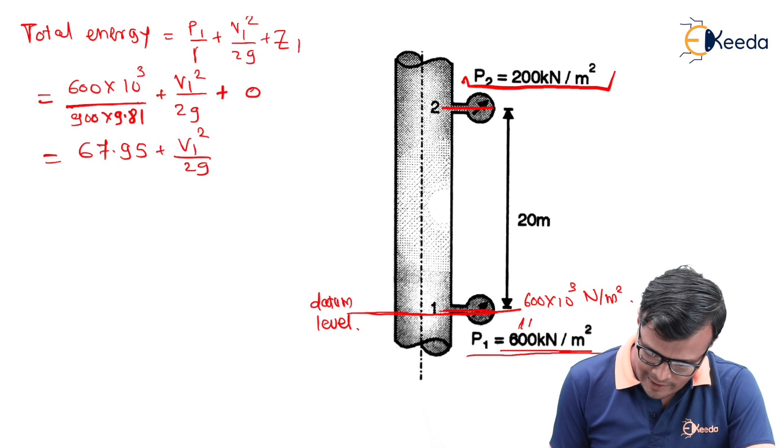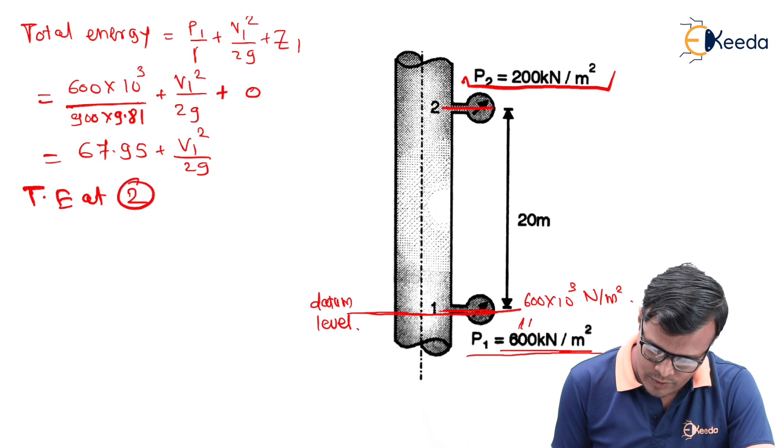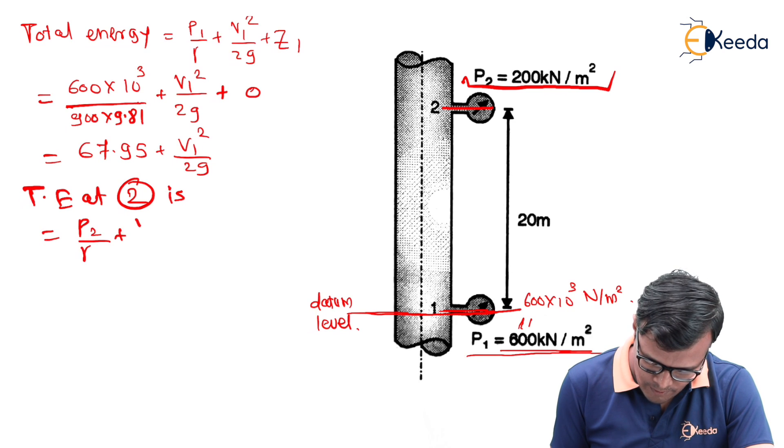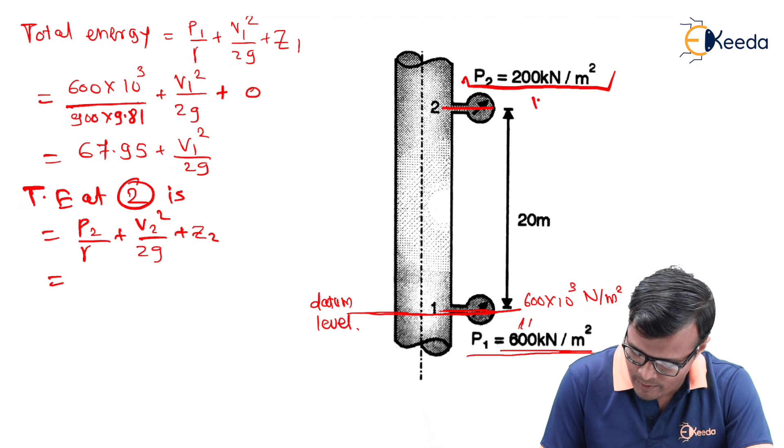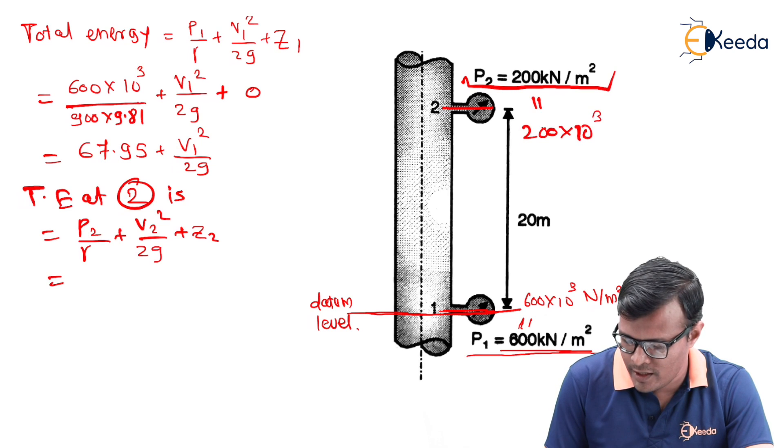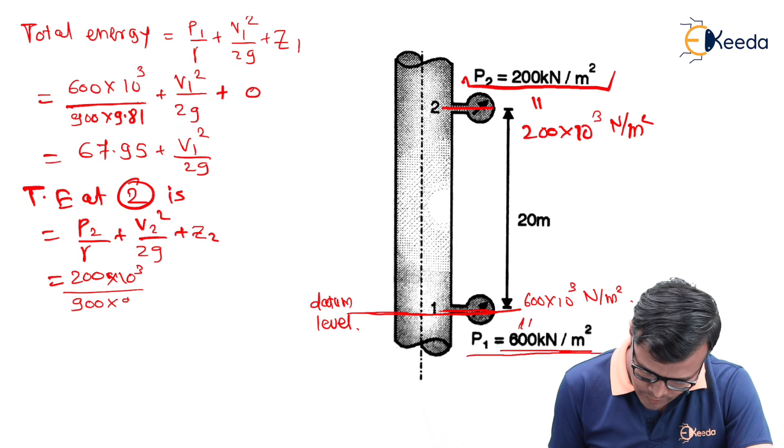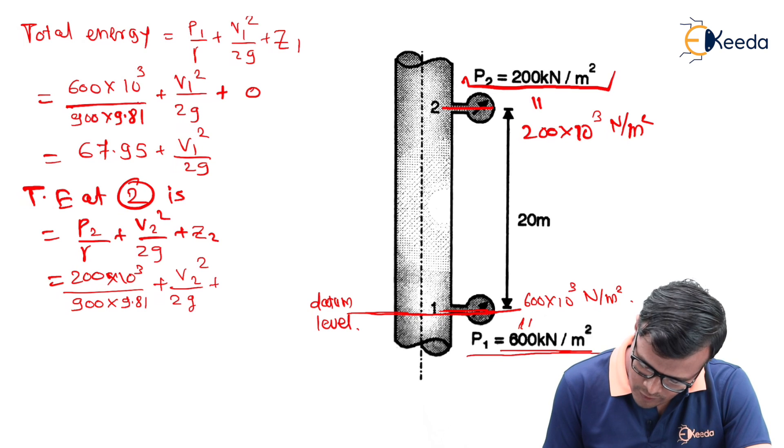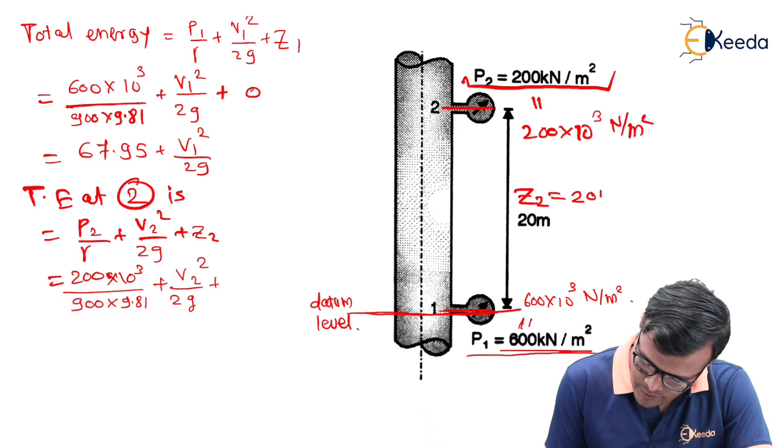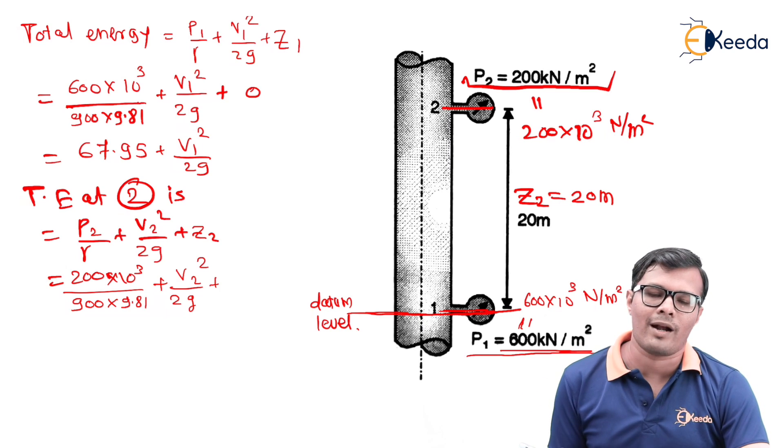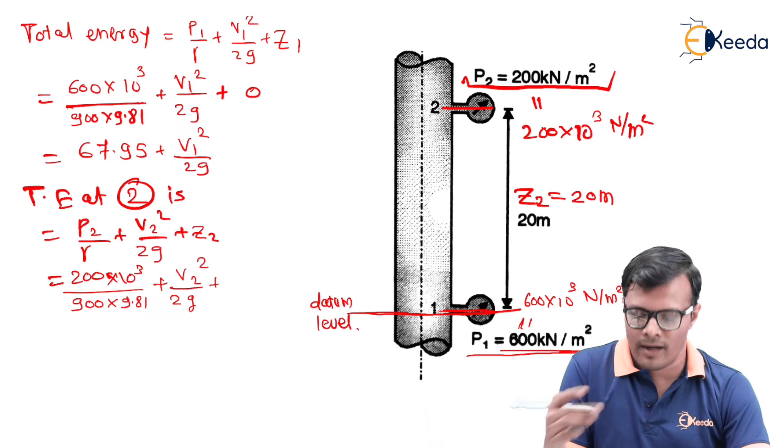Similarly, total energy at 2 is P2 upon gamma plus V2 square upon 2G plus Z2. P2 is 200 × 10^3 N per meter square, so 200 × 10^3 upon gamma value 900 × 9.81, plus V2 square upon 2G, plus the Z2 value equal to 20 meters because this is the datum level. From the datum level, the second gauge is located at 20 meter height, so Z2 is 20.